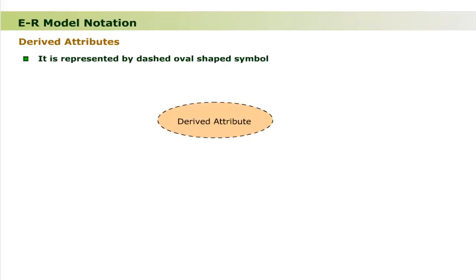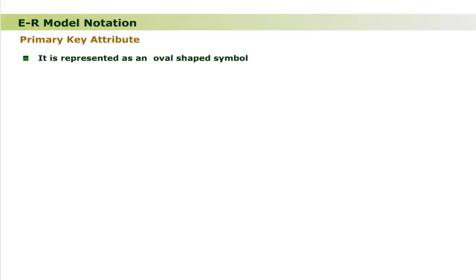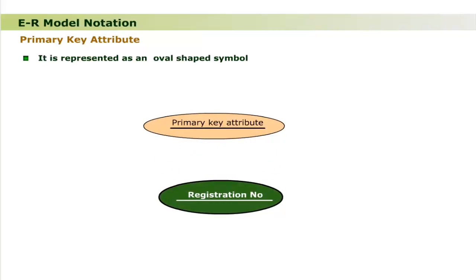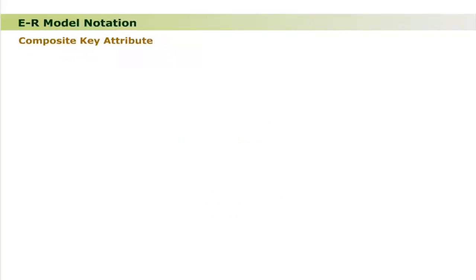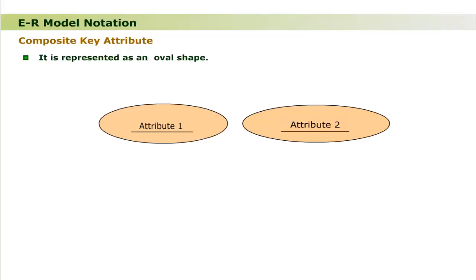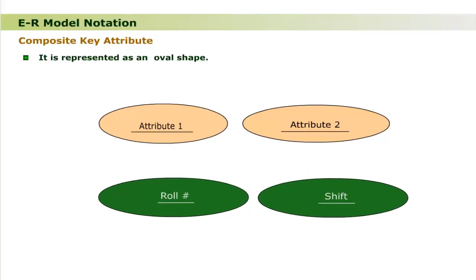The derived attribute is represented by a dashed oval-shaped symbol. The name of the attribute is written inside. For example, the derived attribute 'age' is represented as shown. The primary key attribute is represented as an oval-shaped symbol with the attribute name underlined and written inside. For example, the attribute 'registration number' is represented as shown. Each attribute of a composite key is represented by an oval-shaped symbol with the attribute name underlined inside. For example, the attributes 'roll number' and 'shift' are shown as a composite key.